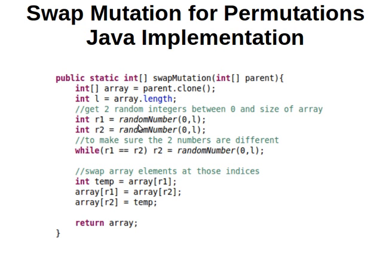Then we randomly pick two numbers, r1 and r2. I have a method called random number which generates a random integer between 0 and l minus 1, so l is not inclusive. We don't want r1 and r2 to be equal, so we keep looping and change r2 until it's not equal to r1, because we don't want to swap an element with itself.